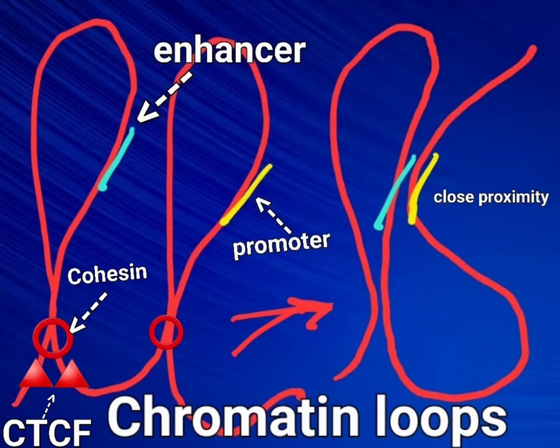Identified chromatin loops include those with active regulatory interactions, e.g., promoter-enhancer interactions, and those with repressive interactions, e.g., polycomb complexes.